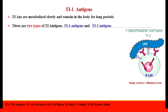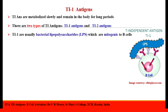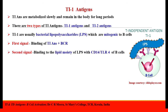There are two types of T-independent antigens: Ti1 antigens and Ti2 antigens. Ti1 antigens are usually bacterial lipopolysaccharides which have mitogenic properties and can deliver dual signal to the B-cells. The first signal is binding of the B-cell receptor to the T-independent antigen. The second signal is the binding of the lipid moiety of the lipopolysaccharide with CD14 or TLR of the B-cells.